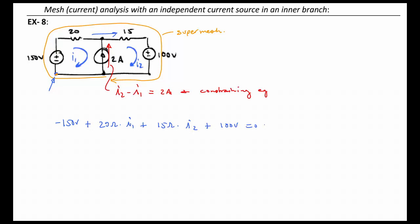Next, because this equation is in I1 and I2, and let's say we wanted to solve for I1, we would take our constraining equation and rearrange it so that we can express I2 in terms of this 2 amps and I1. We will now plug that into our 1 KVL equation. So we will have 20 ohms times I1 plus 30 volts, because 15 times 2 amps, plus 15 ohms times I1 is equal to, and now I'm going to bring the 150 over and the 100 over, and let's bring the 30 over as well. Now we have 35 ohms times I1 is equal to 20 volts, and I1 then is equal to 4 sevenths of an amp.